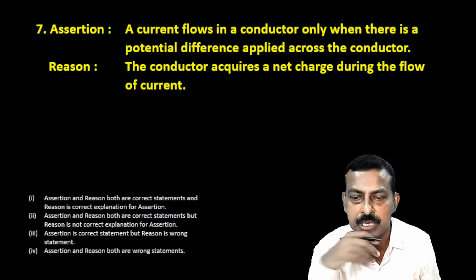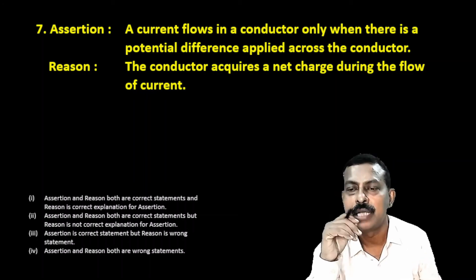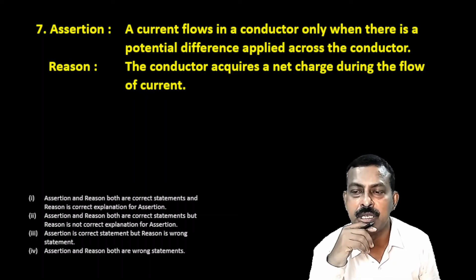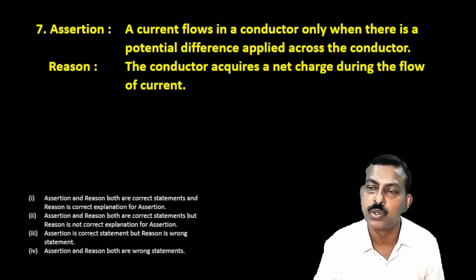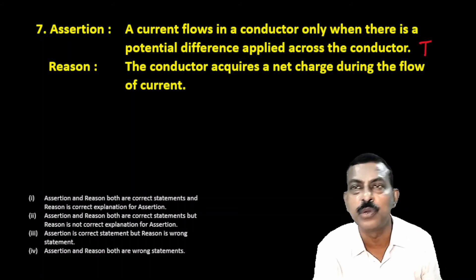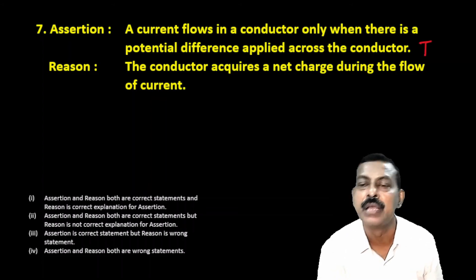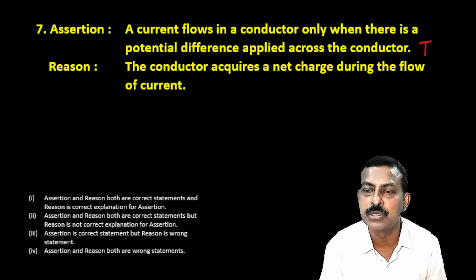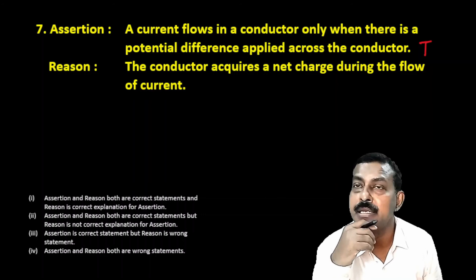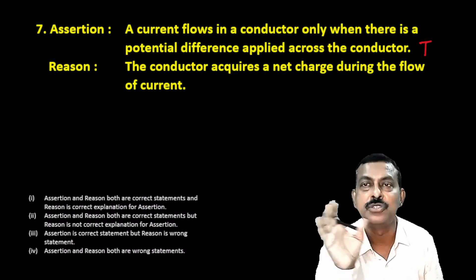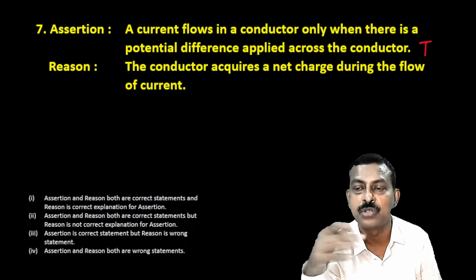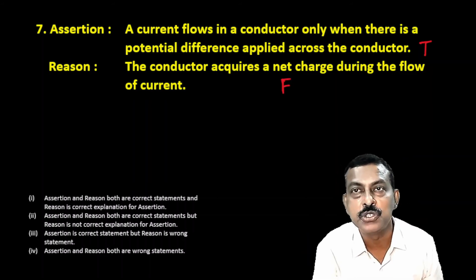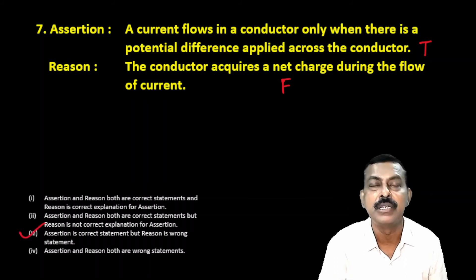Next question. Assertion: current flows in a conductor only when there is a potential difference applied across the conductor. This is a correct and true statement — current flows only when potential difference is applied. Reason: the conductor acquires a net charge during the flow of current. This is false — conductors do not acquire any net charge during current flow; the net charge remains zero as it does not become a charged body. So assertion is true, reason is false — third option is correct.